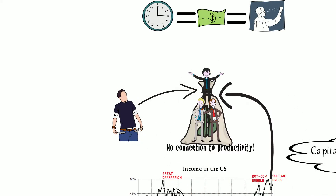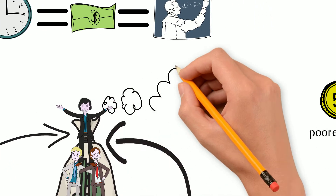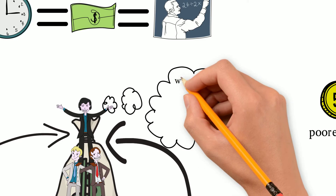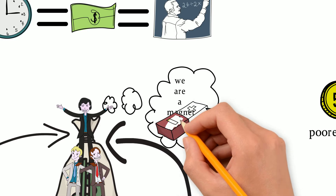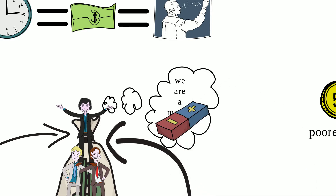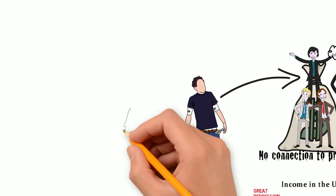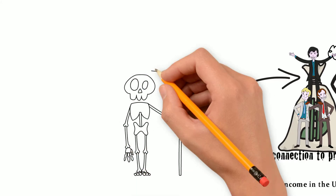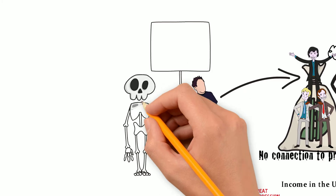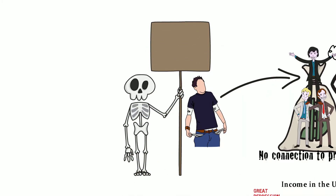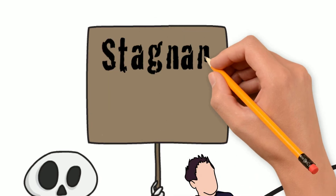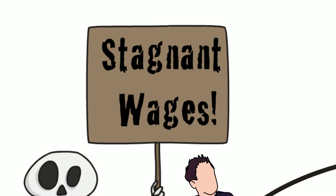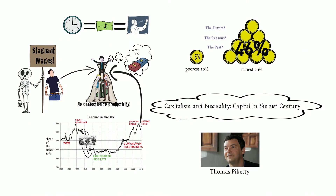Indeed, the richest 10% of US Americans are absorbing three quarters of the annual growth. Thus, while the economy grows at 2%, most people — in fact 90% — will see their income rise only by 0.5%. And that is just the average, meaning that the poorest half of the population may not see any rise in incomes at all. This actually explains a very present phenomenon in the US and also in Europe: stagnant wages despite economic prosperity.